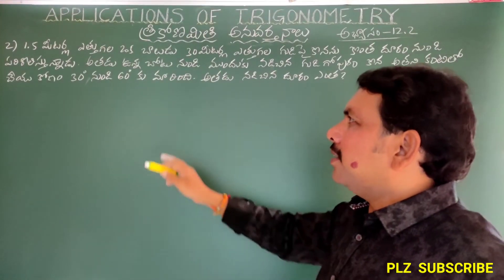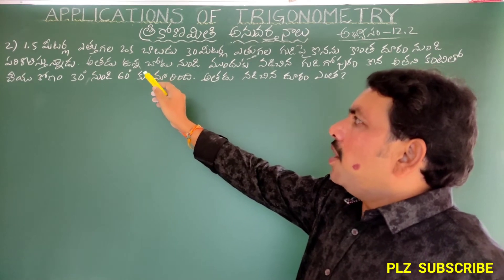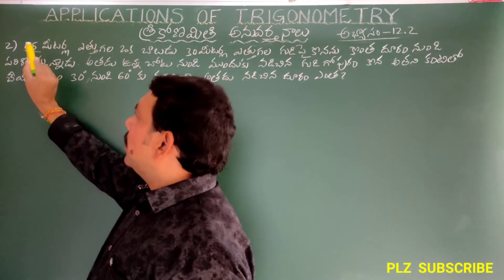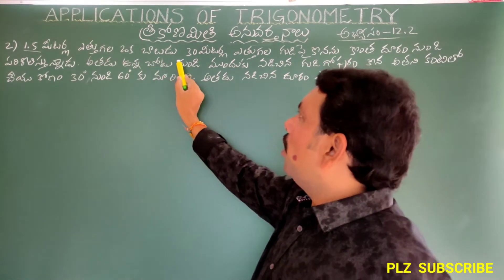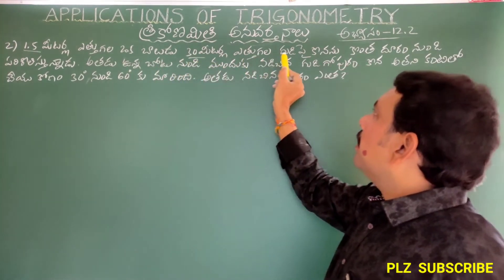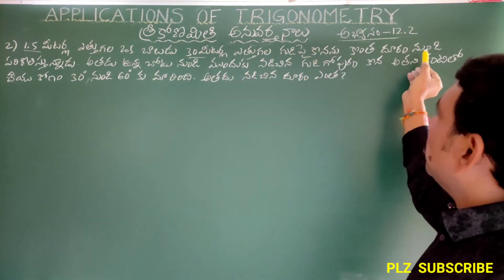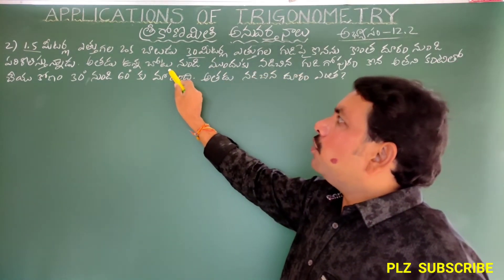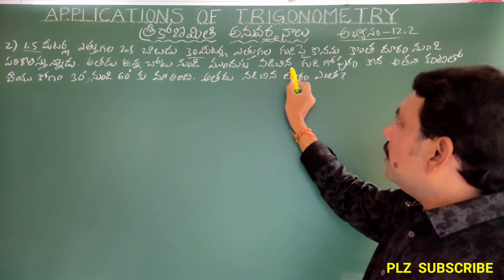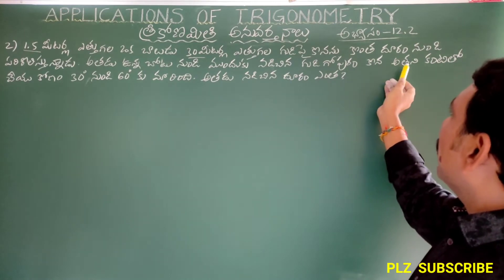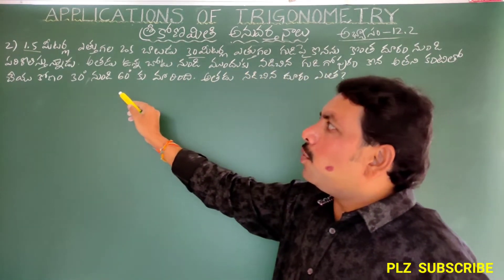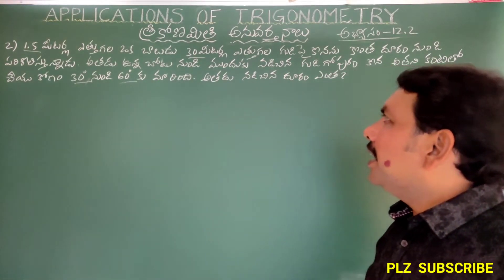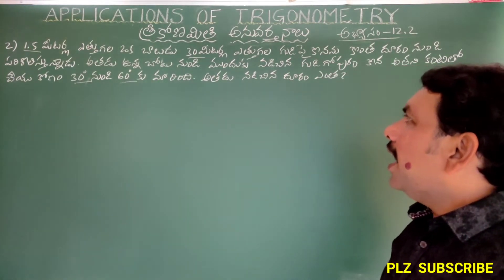Yes. Second question: a person of height 1.5 meters observes a flag post, making angles of elevation of 60 degrees and 30 degrees. Solve it the same way.